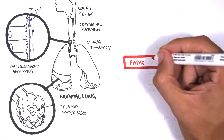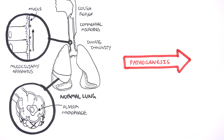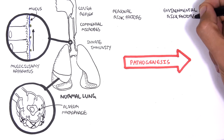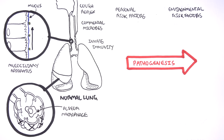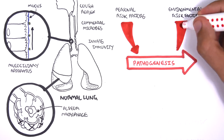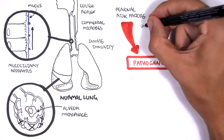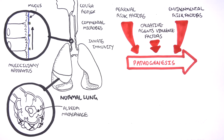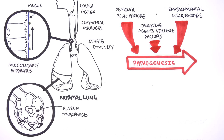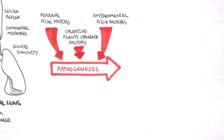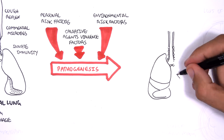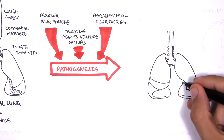The pathogenesis of pneumonia occurs when there are personal risk factors, environmental risk factors, or when the causative microbes themselves have virulent factors which enable them to cause an infection, cause pneumonia, and cause consolidation.